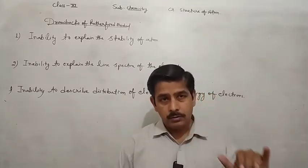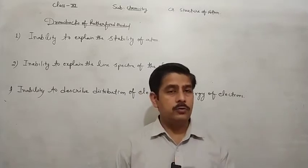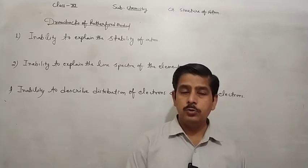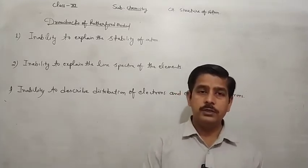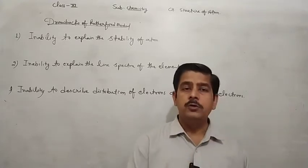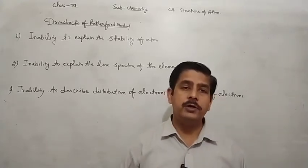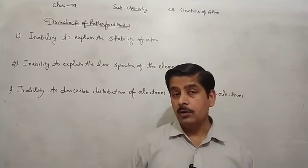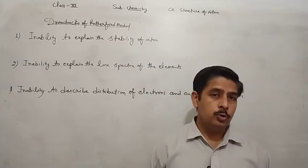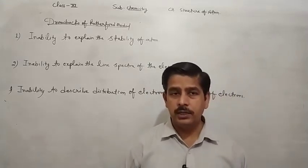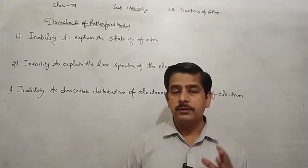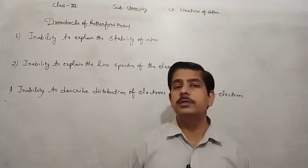The electron revolves around the nucleus. Since the electron is a charged particle revolving around the nucleus, according to electromagnetic wave theory it should continuously emit radiation. As the electron emits radiation, it loses energy, and as a result the radius of its orbit should become smaller and smaller.